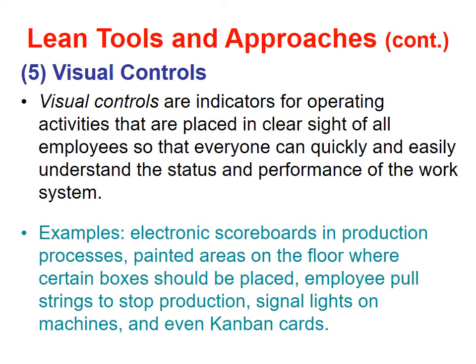Visual controls are indicators for operating activity that are placed in clear sight of all employees so that everyone can quickly and easily understand the status and performance of the work system. Examples include electronic scoreboards in production processes, painted areas on the floor where certain boxes should be placed, employee pull strings to stop production, signal lights on machines, and kanban carts.